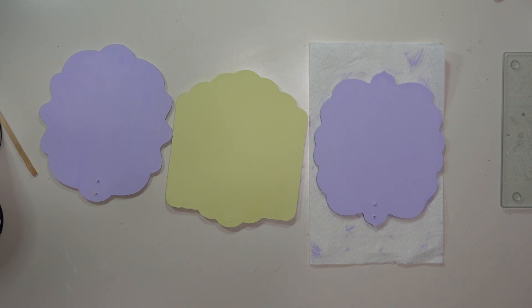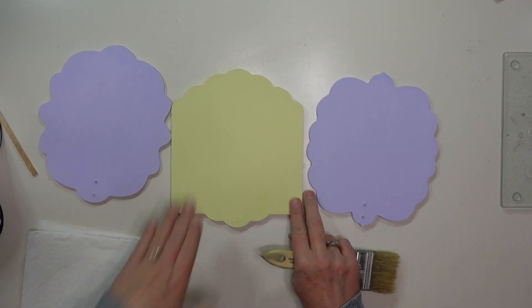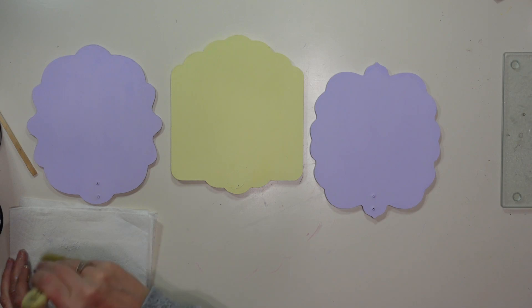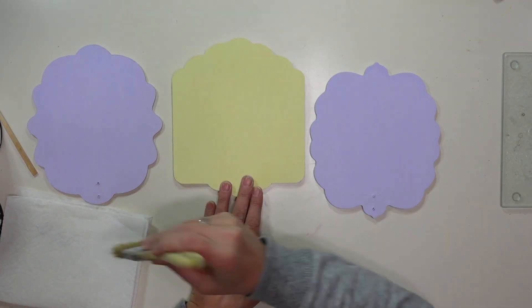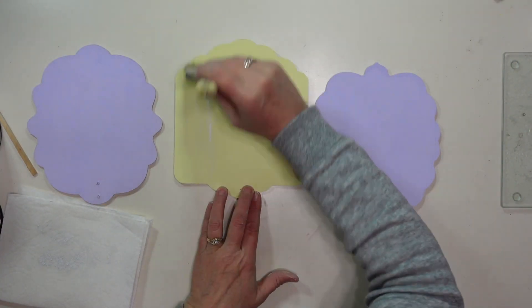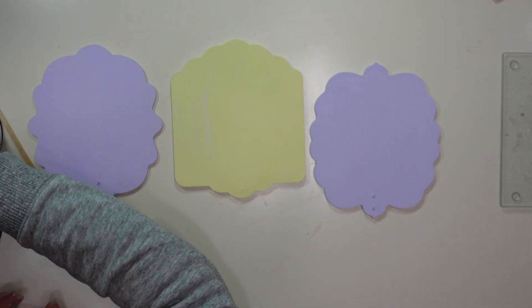And now that the paint is dry on these, I'm going to dry brush these with a little bit of white paint just very lightly just to kind of lighten them up and give them a little bit of dimension as well.